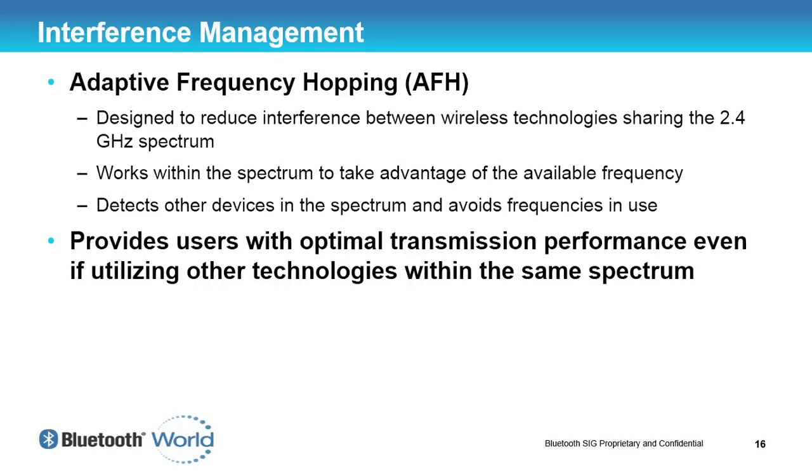It works by examining which frequencies are being used, which are experiencing interference, and which have a low signal-to-noise ratio, then communicating which channels to use and which to avoid. This provides optimum transmission performance even when other technologies use the same spectrum. As an example of robustness: a customer had a Bluetooth device at the end of a welding arm in a factory — welding arms are essentially spark gaps from an interference standpoint. Their requirement was that only 2% of packets could be lost, and the actual packet loss rate turned out to be just two packets in a million.